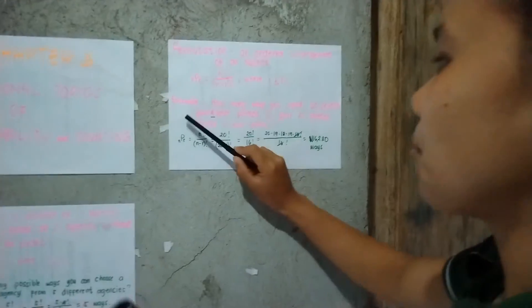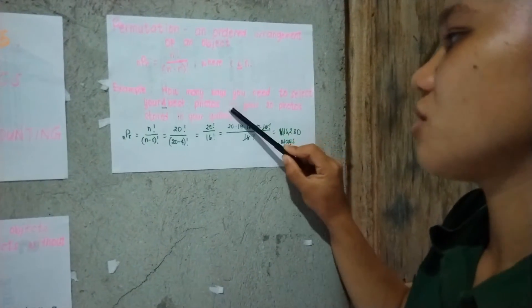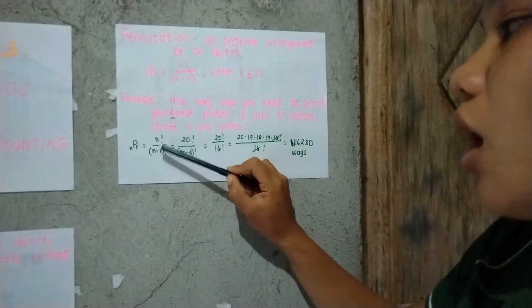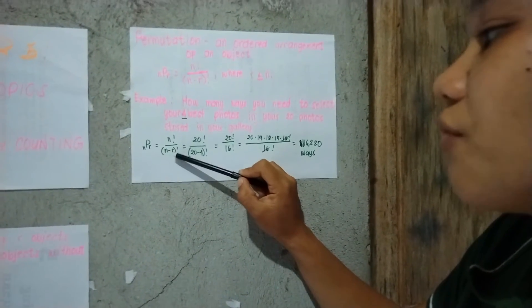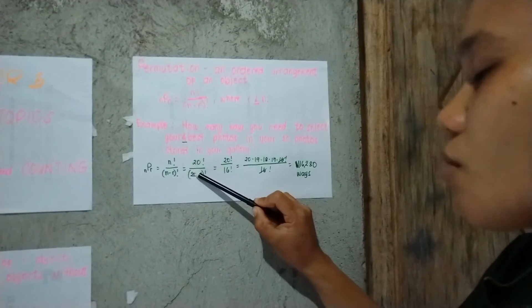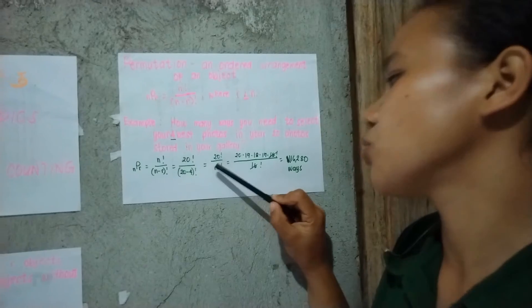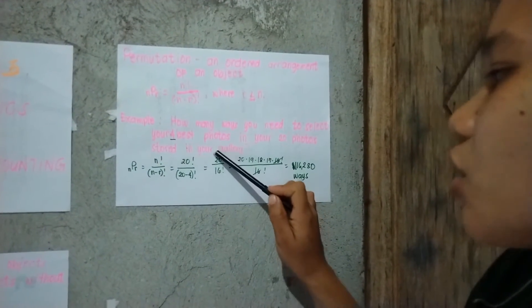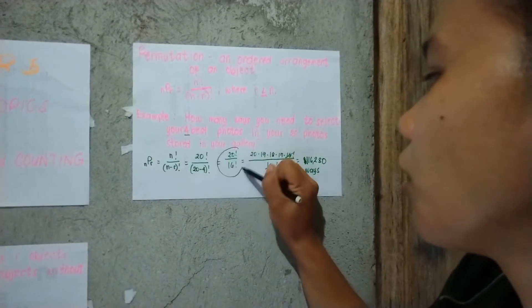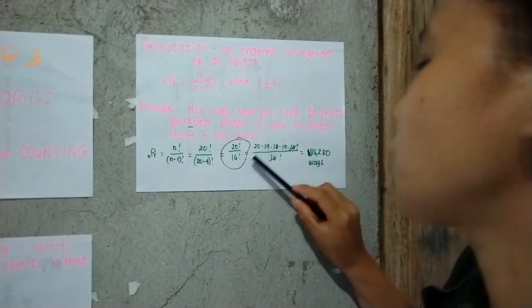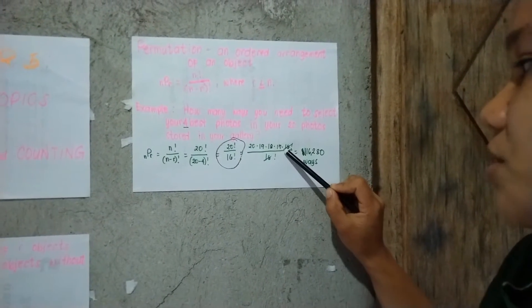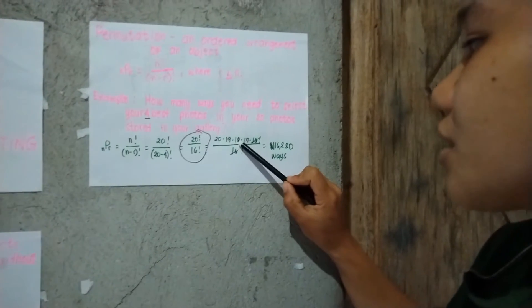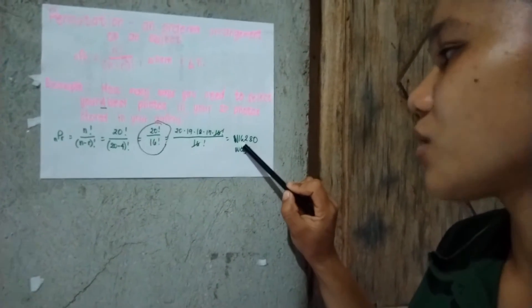Take this example: How many ways do you need to select your four best photos from 20 photos stored in your gallery? Let's solve: n is 20 and r is 4, so n factorial over (n minus r) factorial equals 20 factorial over (20 minus 4) factorial, which equals 20 factorial over 16 factorial. This equals 20 times 19 times 18 times 17, giving us 116,280 ways.